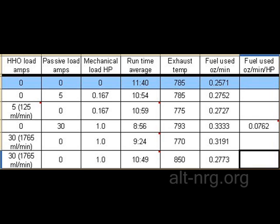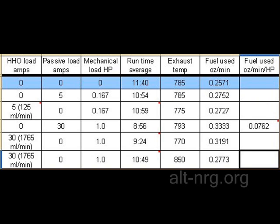On the fourth line, we have a 30-amp passive load, or one mechanical horsepower load on the output shaft of the internal combustion engine with no HHO being re-injected. The average run time dropped from 11 minutes 40 seconds to 8 minutes 56 seconds. This resulted in an increase of fuel used to 0.3333 ounces per minute, or one-third ounce per minute. This is how I derived 0.0762 ounces per minute per horsepower load applied to the output shaft. Taking that number and dividing it into the no-load fuel consumption rate of 0.2571 results in 3.374 horsepower worth of fuel being consumed by the four-stroke engine just to keep itself running.